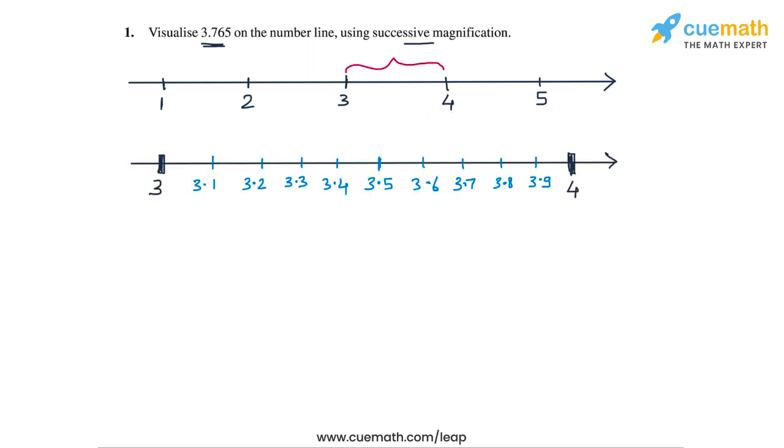So here I have magnified the interval from 3 to 4. We can see this magnified interval divided into 10 parts and we can see the markers for 3.1, 3.2 and so on all the way up to 3.9.